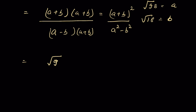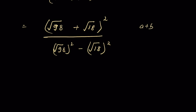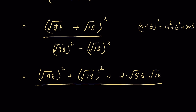So we have (√98 + √18)² / (√98² − √18²). Expanding (a + b)² = a² + b² + 2ab, the numerator becomes √98² + √18² + 2 × √98 × √18.